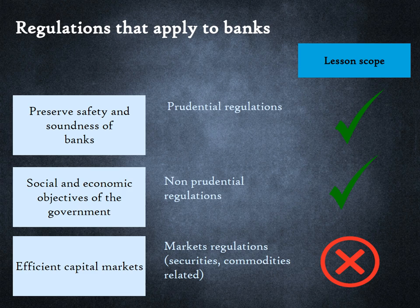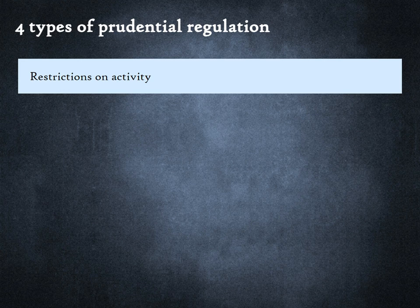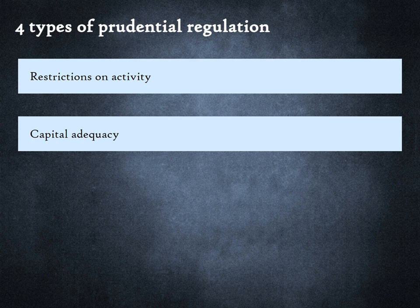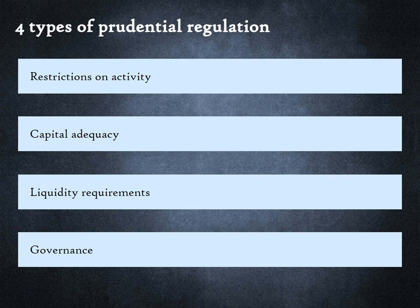We will begin with a look at prudential regulations. The first set of prudential regulations involve restricting banks from certain activities. However, all economic activity carries risk. Hence, capital adequacy regulations ensure that banks have enough funds of their own so that if there are losses on loans, the bank can absorb the losses without depositors taking a haircut. Additionally, banks lend over long time periods but borrow on short tenures — for instance, depositors can withdraw money from demand deposits any time. Liquidity requirements are imposed on banks to manage this risk. Regulators not only impose outcomes like capital adequacy and liquidity, they also influence the process by which banks assume and manage risk. We will classify such regulations under the umbrella of governance regulations.